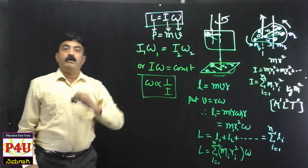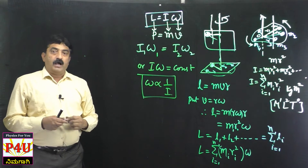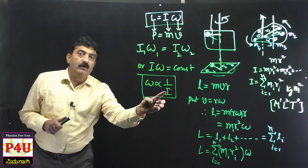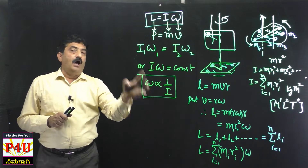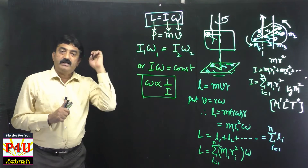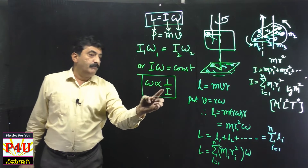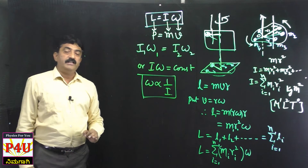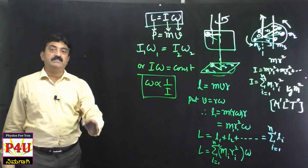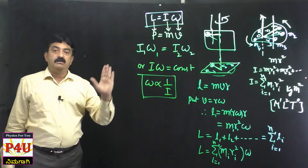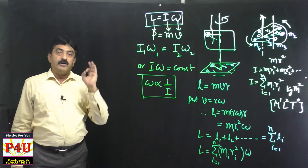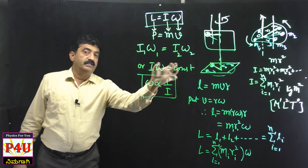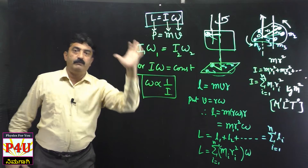According to this equation, I·ω is constant, meaning ω is inversely proportional to I. If moment of inertia decreases, angular velocity increases. If moment of inertia decreases, angular velocity increases. That is, ω is proportional to 1/I.